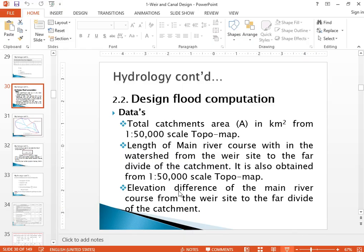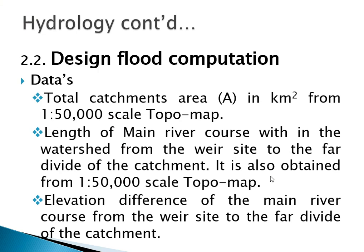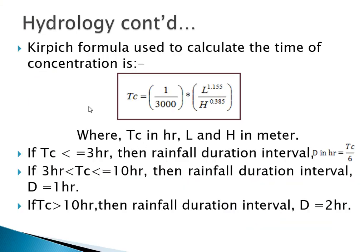To determine the lag time, you should first know the time of concentration. The time of concentration from Kirpich's formula — as you know from hydrology — can be determined in hours using this formula: time of concentration is given by an equation where L is the length and H is the slope. After determining this in hours, you should convert it to minutes because the HMS model requires lag time in minutes.